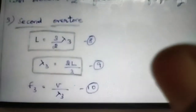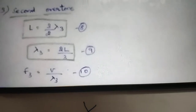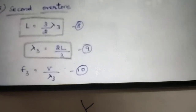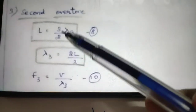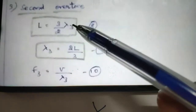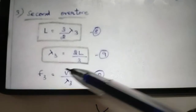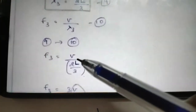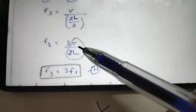For the second overtone: adding half, 1, and 1 gives 3 by 2 lambda. So lambda 3 is equal to 2L by 3. Calculating frequency F3 equals V by lambda 3. Applying lambda 3: F3 equals V divided by (2L by 3), which gives F3 equal to 3V by 2L.